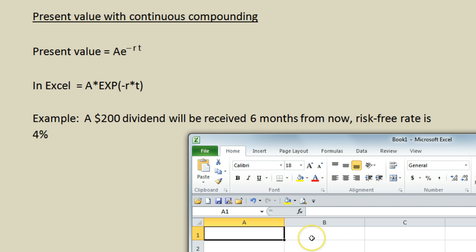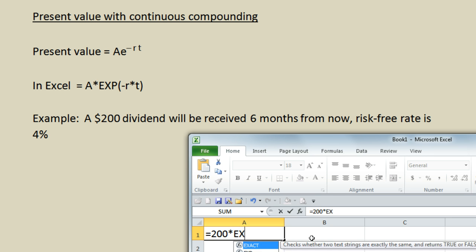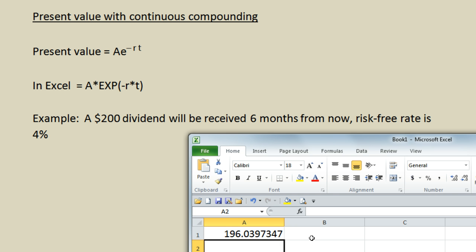So we are going to take the amount 200 we are going to multiply by e raised to the or in Excel EXP open parentheses negative the interest rate is four percent and the time is six months from now and again you can choose whether to do six over 12 or you can do just 0.5 for half a year either way. The answer you will get is that the 200 dividend dollar dividend received six months from now is worth $196.04. That is worth less than $200 because we are discounting that amount to present value.